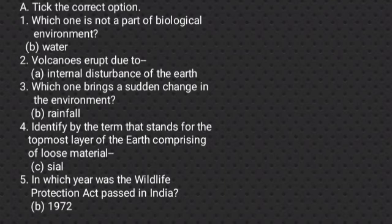Volcanoes erupt due to internal disturbance of the earth — that is the correct answer. Which one brings a sudden change in the environment? There are four options: A. Formation of river — it takes time. C. Growth of plants — it also takes so much time. D. Formation of mountain — it takes so long. So, B. Rainfall — it is one of the sudden changes in the environment. Rainfall is the correct answer.